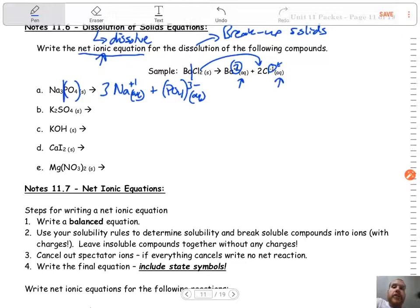I would encourage you guys to pause the video right now and then I will write the answers in here in just a minute that you can check your work. All right. So here we go. The next one, it would be two potassium ions aqueous plus one SO4 two minus.